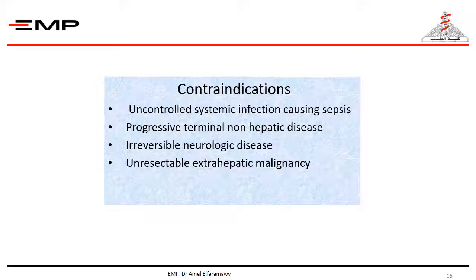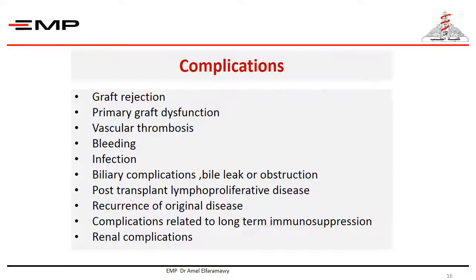Liver transplantation cannot be done in cases of uncontrolled systemic infection causing sepsis, progressive terminal non-hepatic disease, irreversible neurologic disease, or unresectable extra-hepatic malignancy. The procedure may be complicated by graft rejection, which is the most common complication, and primary graft dysfunction, which is the most serious complication, as well as vascular, infection, and biliary complications. Patients should receive long-term immunosuppression, which increases the risk of infection.